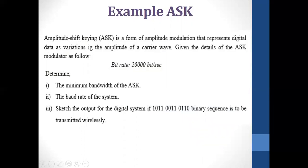Let us see one example. Amplitude shift keying is a form of amplitude modulation that represents digital data as variations in the amplitude of the carrier — just like AM, but the data is digital. The encoding input in analog AM was continuous, whereas here it is binary. Given: an ASK signal with a bit rate of 20 kilobits per second. The question asks for the minimum bandwidth of the ASK signal, the baud rate of the system, and the output waveform if the binary sequence is to be transmitted.